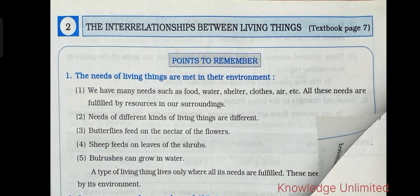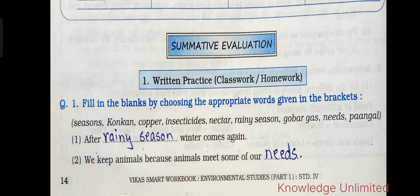Let's move to the first question: fill in the blanks by choosing the appropriate words given in the brackets. The first one is: after dash, winter comes again. The answer is 'rainy season' — after rainy season, winter comes again. Next: we keep animals because animals meet some of our needs.